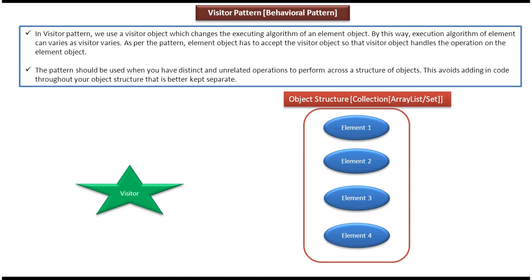Now if you read this explanation, you will understand clearly. In Visitor Design Pattern, we use a Visitor Object which changes the executing algorithm of an Element Object. The Visitor visits each and every element in the object structure and performs some operation on each and every element. By this way, the execution algorithm of an Element can vary as the Visitor varies.